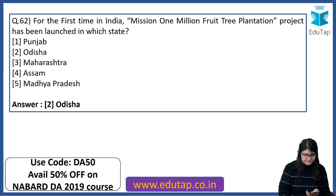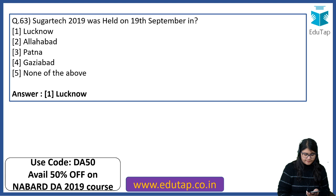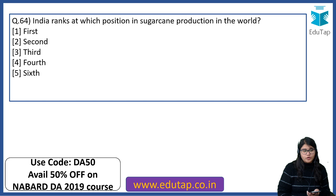Sugar Tech 2019 was held on 19th September — at which place? The right answer is Lucknow. India ranks at which position in sugarcane production in the world? Very important — the right answer is second.